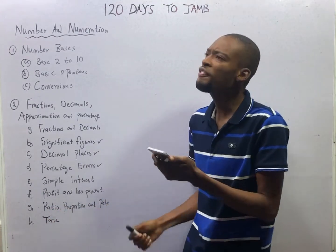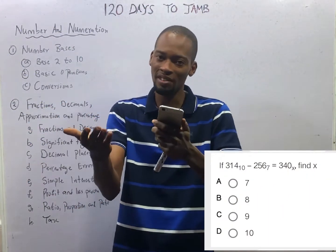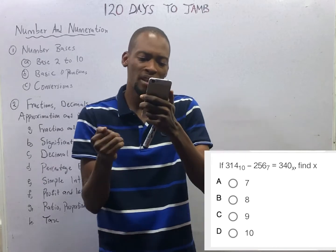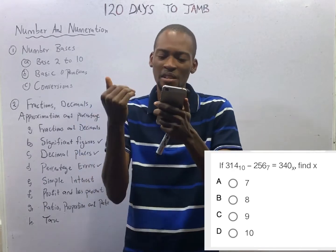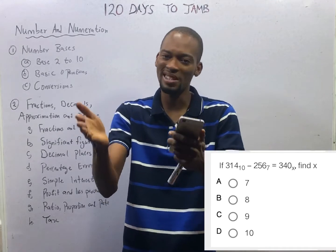Today's question says, if 314 base 10, that is 314, minus 256 base 7, is equal to 340 base S, find S.